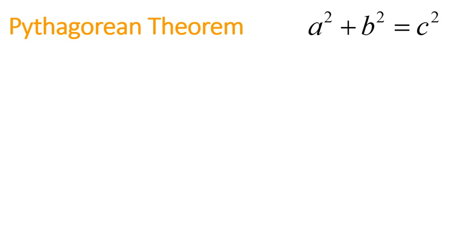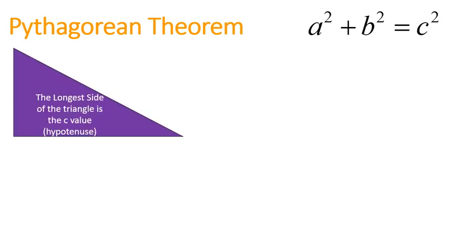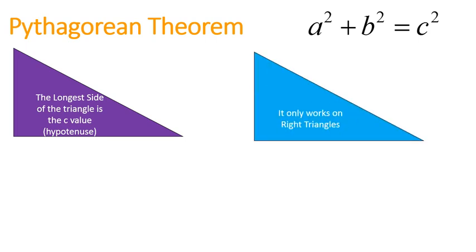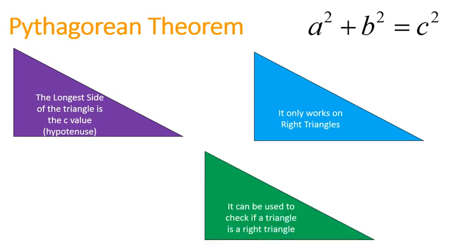So, let's talk about the Pythagorean theorem. The longest side of the triangle is the C value, the hypotenuse. It always has to be the C value. That's really important. The order that you add the other two does not matter. The C value does matter. Make sure that C value is the largest side. It only works on right-angle triangles. Therefore, it can be used to check if a triangle is a right-angle triangle. And that's what we're going to do with our lesson today.